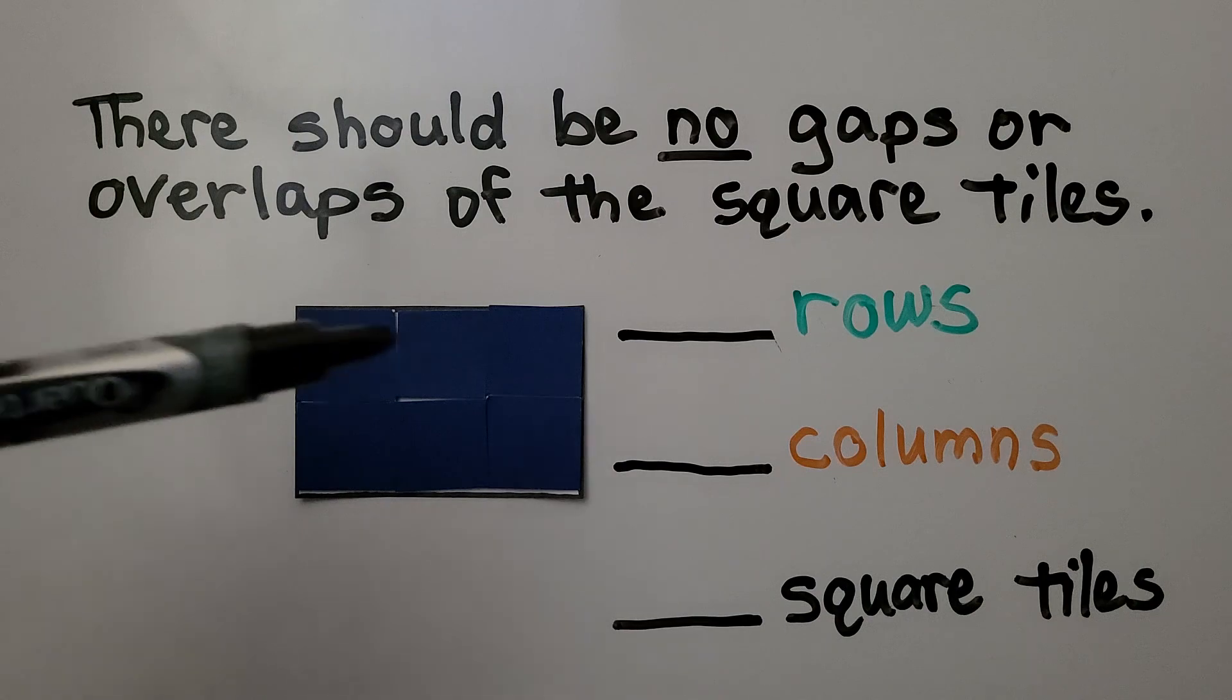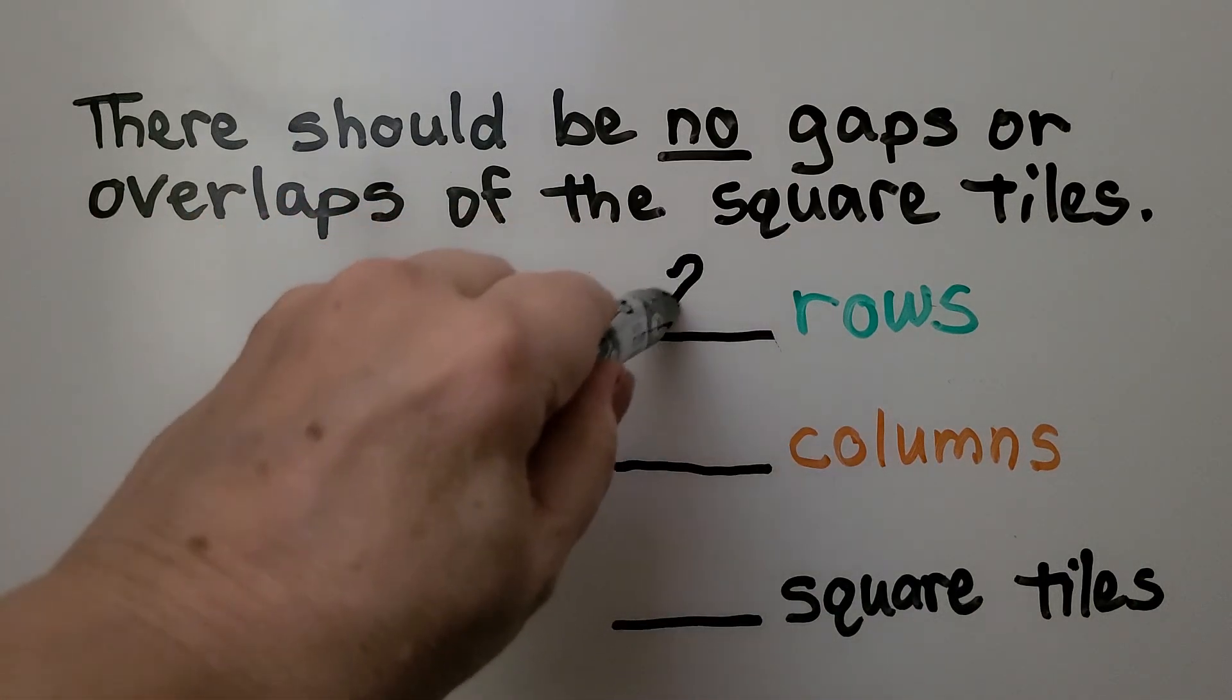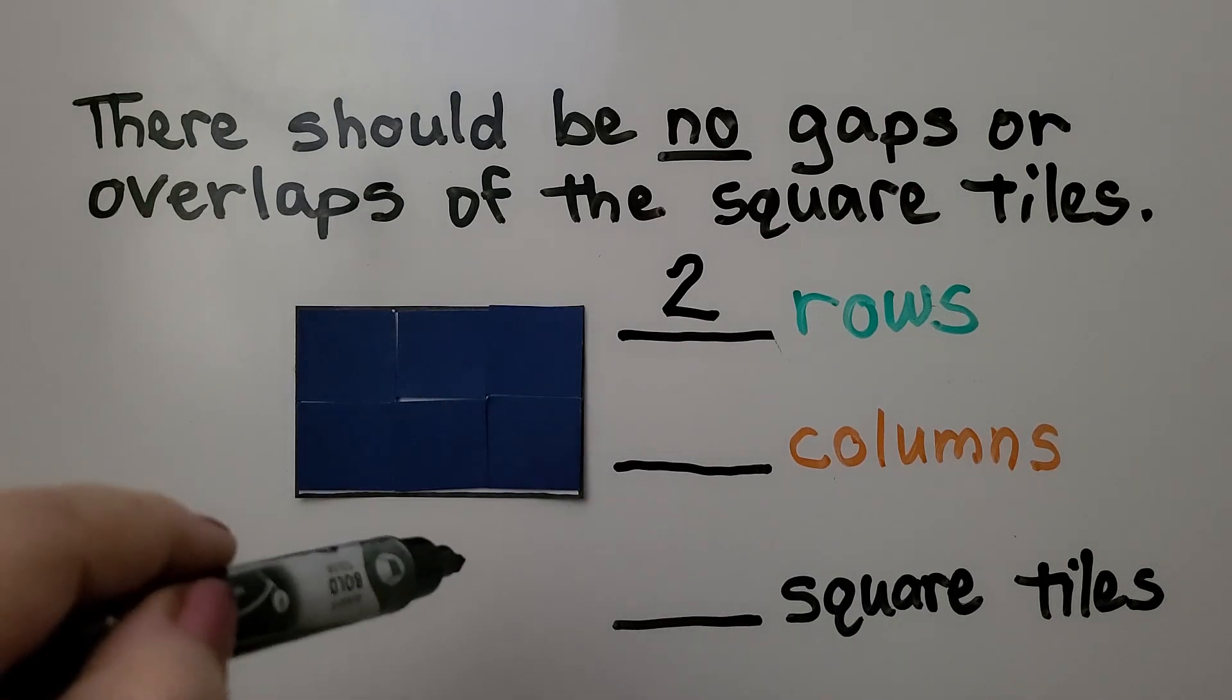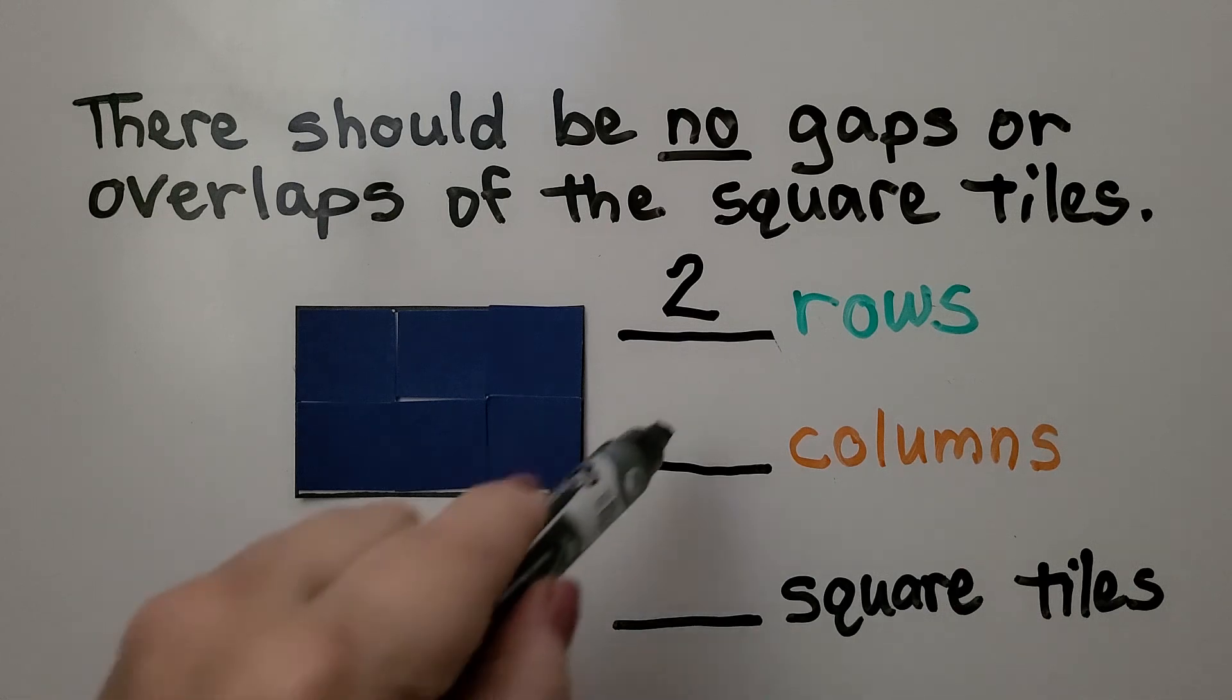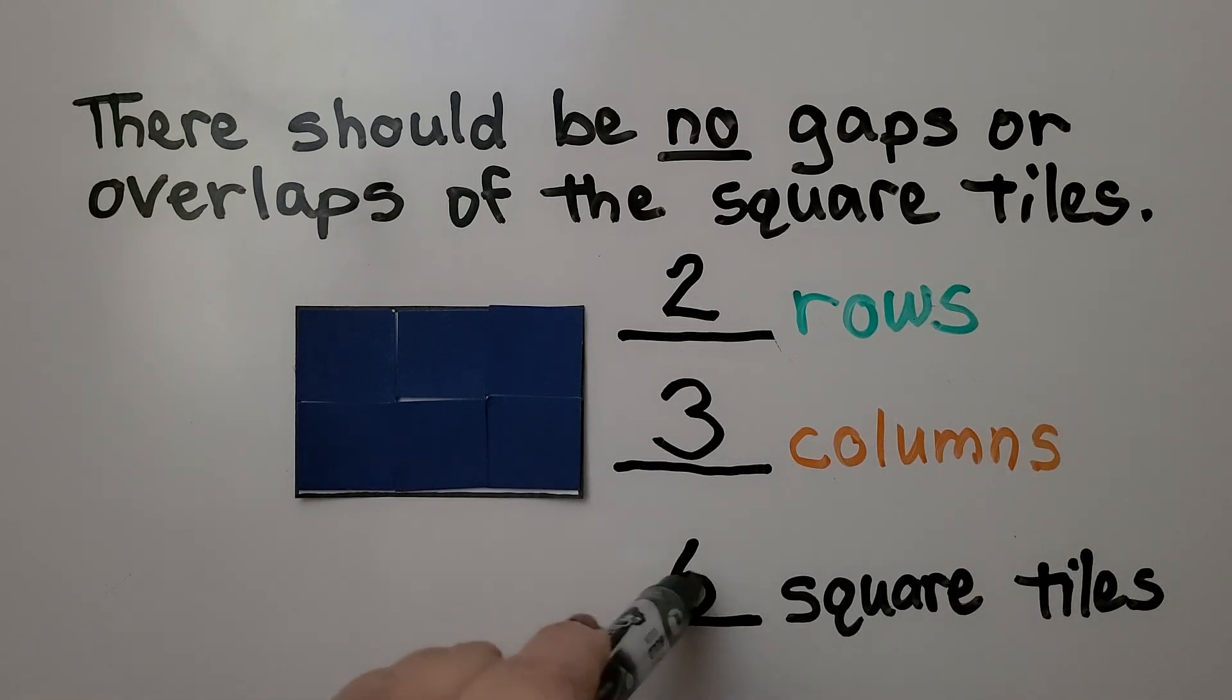We have a row and another row. So we have 2 rows. When we look at our columns, we have 1, 2, 3 columns. And we have 6 square tiles.